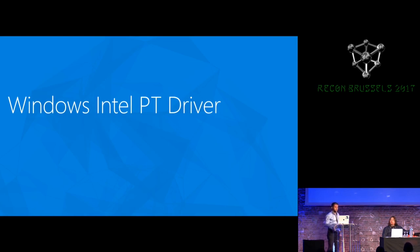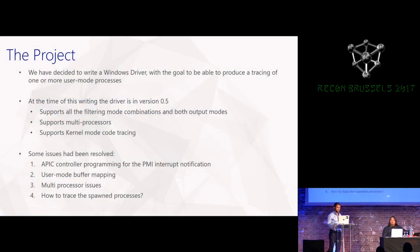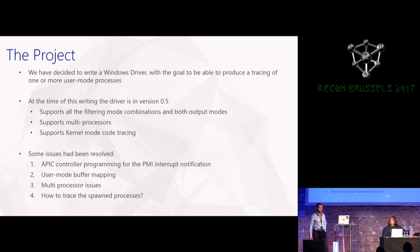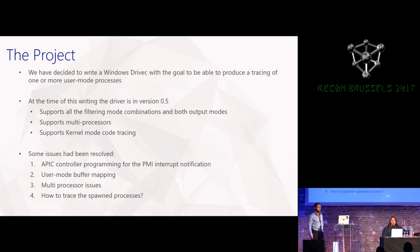Now let's discuss the Intel PT driver implementation. We decided to write this driver to perform tracing directly from a Windows operating system. At the time of this presentation the driver is quite stable, version 0.5. It supports all filtering mode combinations and output modes. New features in this release include multi-processor support and kernel mode code tracing. Developing the driver required overcoming several problems, including mapping the PMI interrupt — for which there was no documentation — and managing multi-processor environments where you must enable Processor Trace once on each processor.